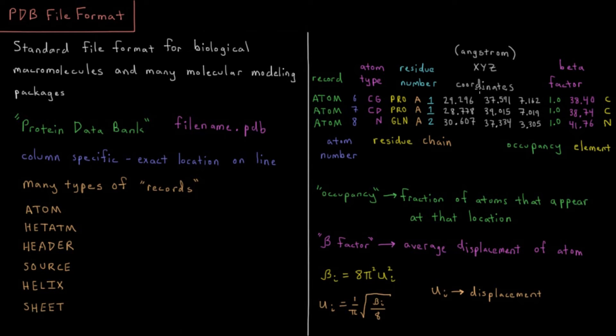Then we have the Cartesian coordinates, which are the same types of information we had in our previous video on XYZ files. A floating point number on our XYZ coordinates. Typically the units are going to be in angstroms.